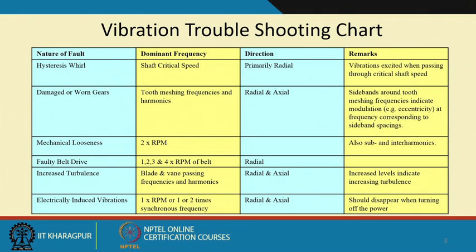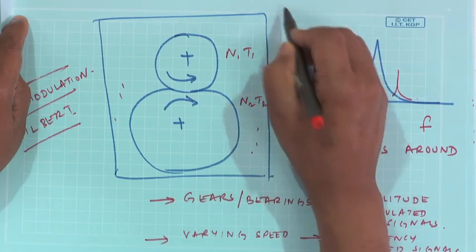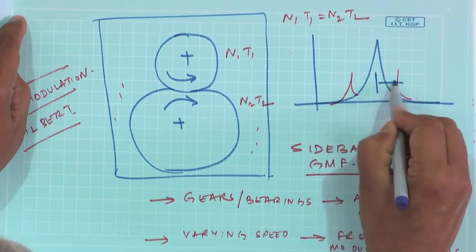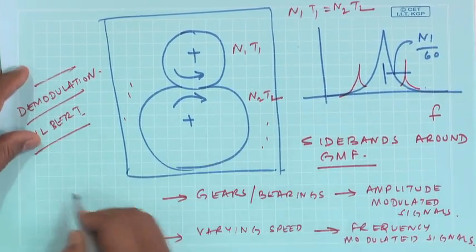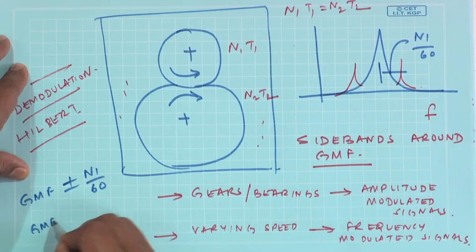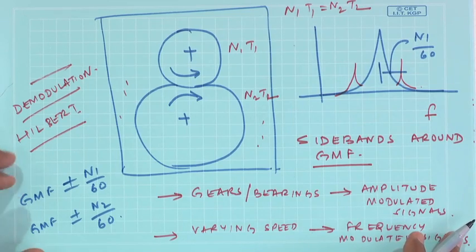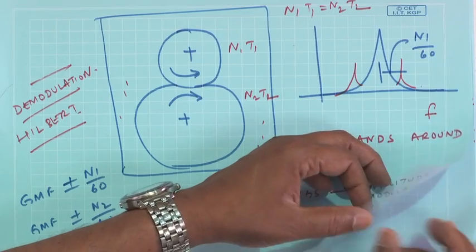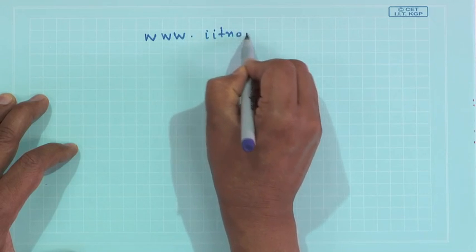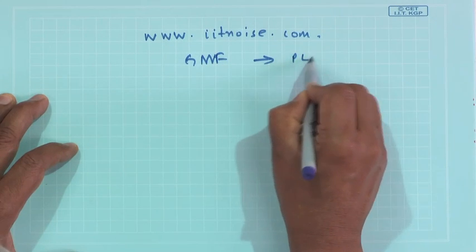You all know if this gear had n1 teeth and n2 teeth, n1 times t1 equals n2 times t2. This distance in hertz will be n1 over 60. I will have GMF plus minus n1 by 60, and GMF plus minus n2 by 60 and so on. For different gearboxes, you can calculate the gear mesh frequencies. Particularly for planetary gearboxes, you can refer to my book, details of which you can find at iitnoise.com, where I have given how to find out GMF of planetary gearboxes.